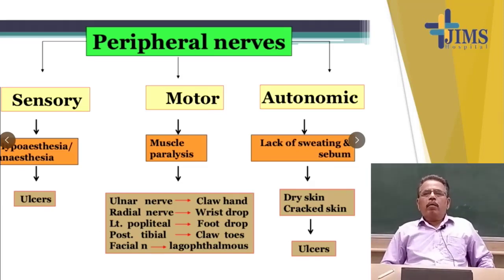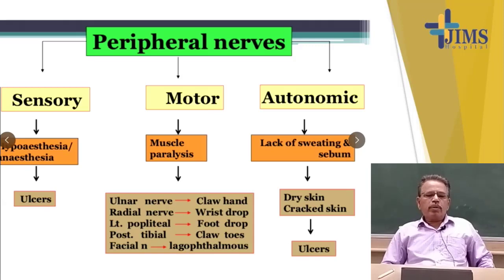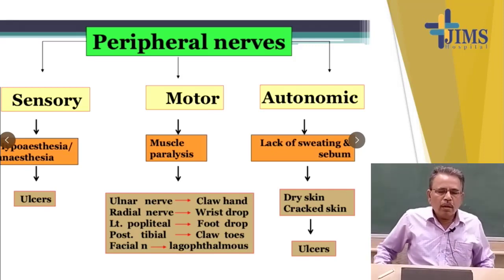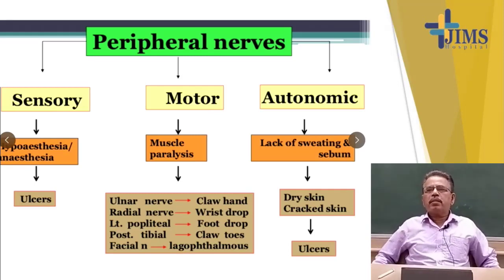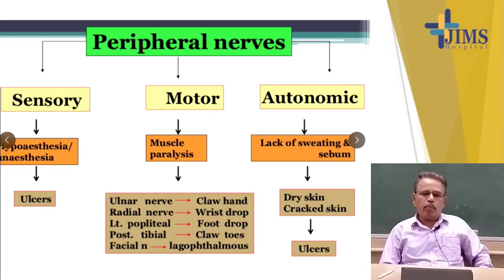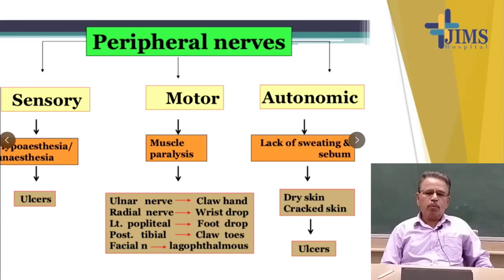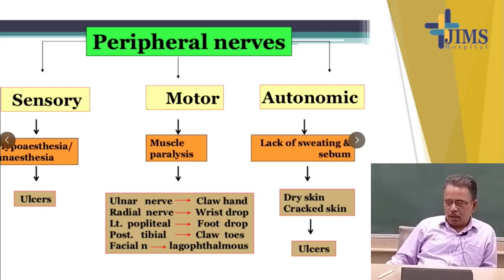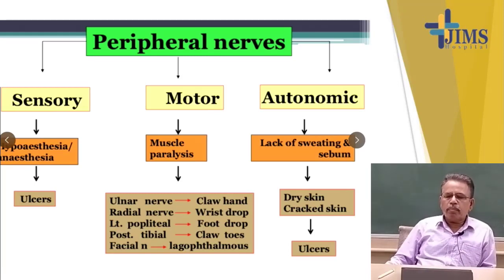Hansen's disease affects the skin and nerves. The nerves involved are the ulnar nerve, median nerve, radial nerve, superficial fibular nerve, posterior tibial nerve, and posterior auricular nerve — these are the peripheral nerves involved. Among sensory nerves, there will be hypoesthesia or anesthesia, which can produce ulcers. If motor nerves are involved, the muscles will be paralyzed. Ulnar nerve paralysis produces claw hand; radial nerve produces wrist drop; lateral popliteal nerve produces foot drop; posterior tibial nerve produces claw toes; and facial nerve involvement produces lagophthalmos.